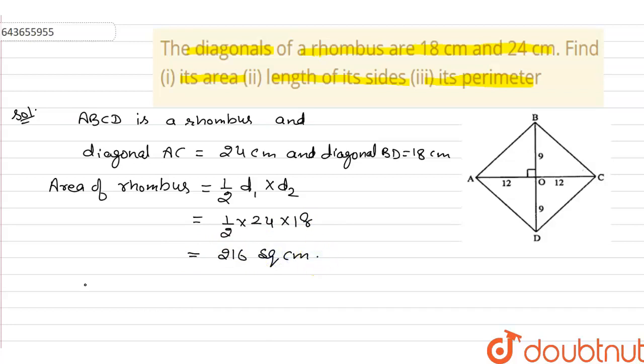Now we want to find the sides of the rhombus. In triangle AOB, angle AOB is 90 degrees because diagonals of rhombus are perpendicular to each other. Therefore, AB square is equal to OA square plus OB square by Pythagorean theorem.